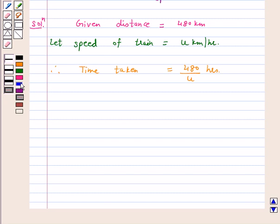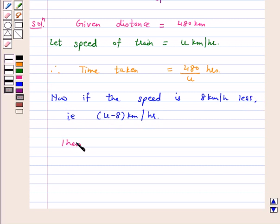Now, if the speed is 8 km per hour less, that is u minus 8 km per hour, then time taken is 480 upon u minus 8 hours.